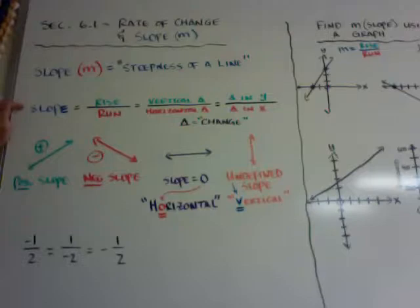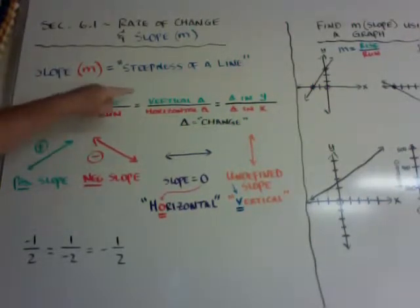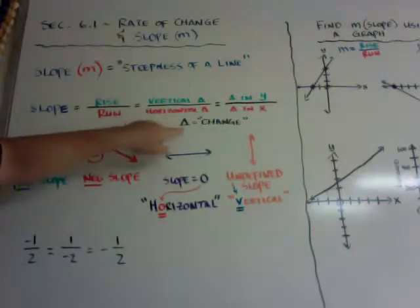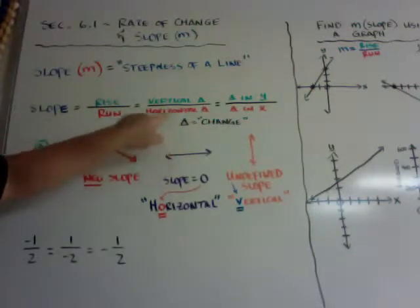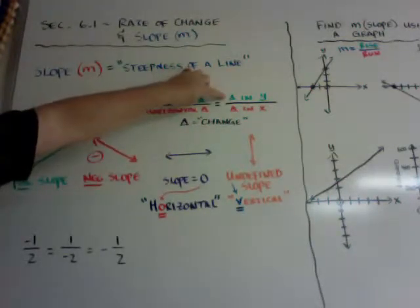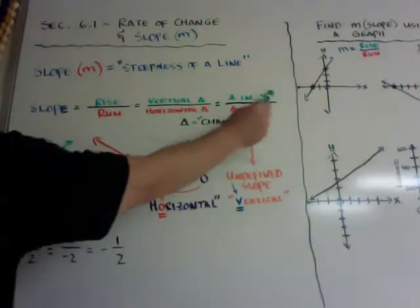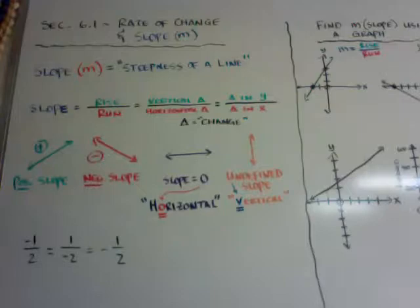The way you find slope is by rise over run, or the vertical change over the horizontal change. This triangle is a delta, which means change — so the change in Y over the change in X. You're going to have to be careful about putting the change in Y over the change in X, and I'll show you why.